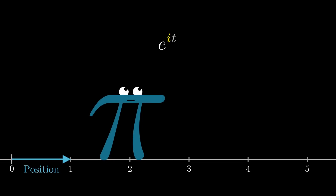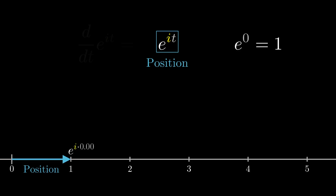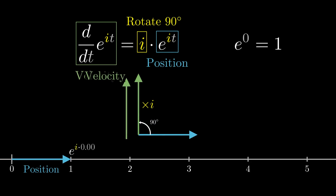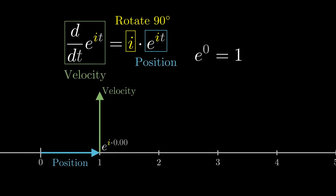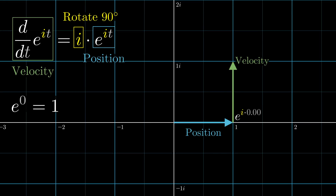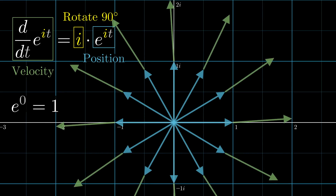But what about if that constant was i, the square root of negative 1? If your position was always e to the it, how would you move as the time t ticks forward? Now the derivative of your position will always be i times itself, and multiplying by i has the effect of rotating numbers 90 degrees. So as you might expect, things only make sense here if we start thinking beyond the number line and in the complex plane. Even before you know how to compute e to the i times t, you know that for any position this might give for some value of time, the velocity at that time will be a 90 degree rotation of that position.